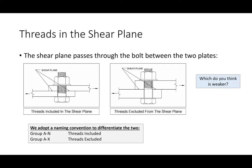The question of threads being in the shear plane: we're essentially asking whether we're shearing through the bolt through the threads, or shearing through the bolt in the main body of the shank. Between threads included and threads excluded, which is weaker? Threads included — exactly right. So we have a naming convention: the letter N represents threads included, and the letter X represents threads excluded.